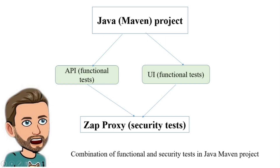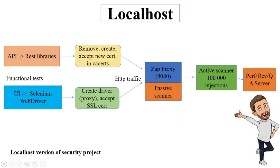How can it be implemented in a Maven functional project? I will tell you briefly how it works. First of all, you install ZAP on your machine locally and implement proxy methods in your functional test. If it's Selenium, you need Chrome or Firefox with proxy settings — your localhost and a ZAP port, for example 8080, which is the default in ZAP.